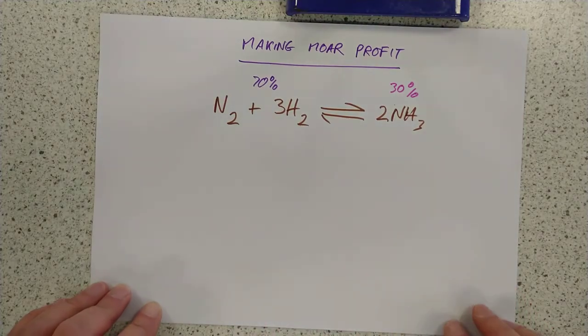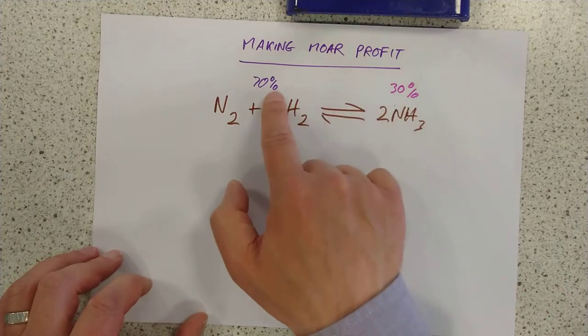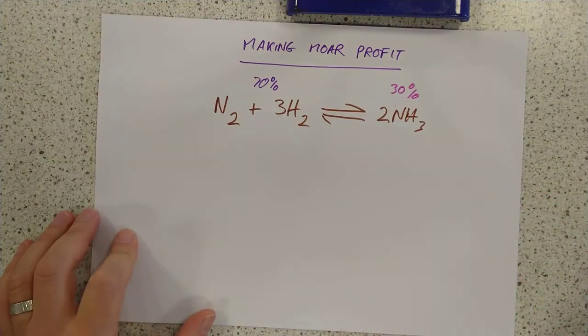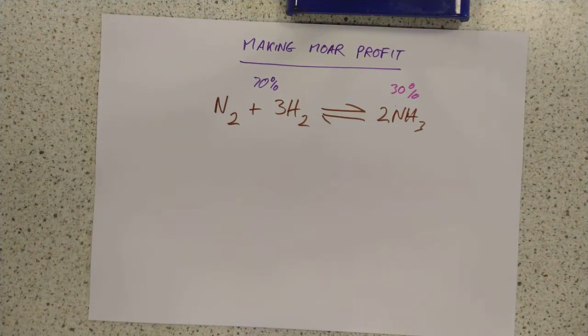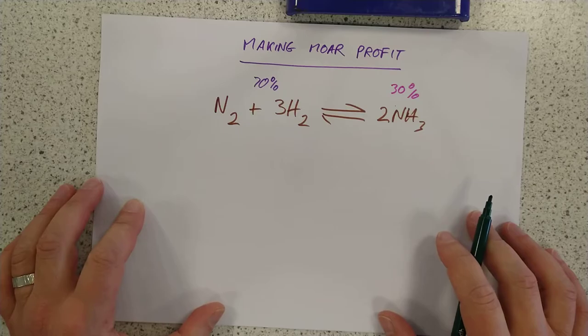So, making more profit. That's what we want to do, guys. There are three ways to change this balance. By the way, if you come back for Advanced Higher, you'll realize that only one of them truly changes the balance, and I'm sorry. But at Higher, there are three different ways to do this, and there is one way which doesn't change the balance. Let's start, oddly enough, with the way that does not change the 70-30, but we still use it anyway. I wonder why. And the answer to that is a catalyst.